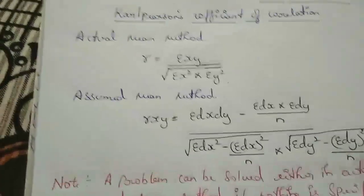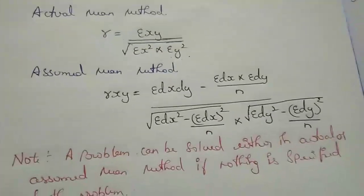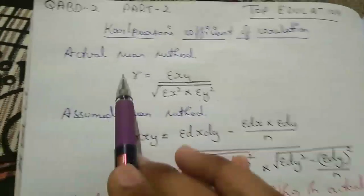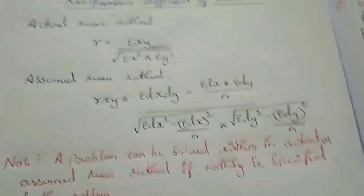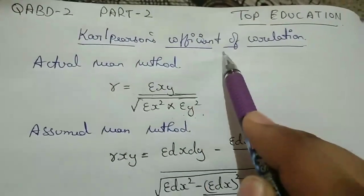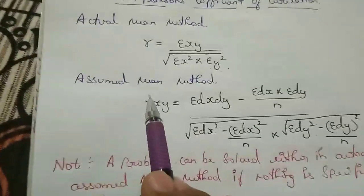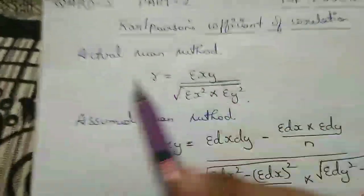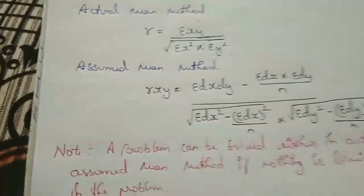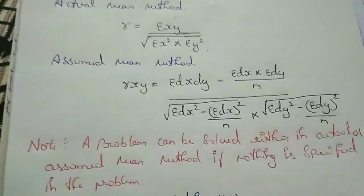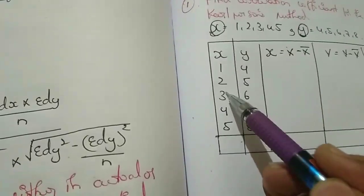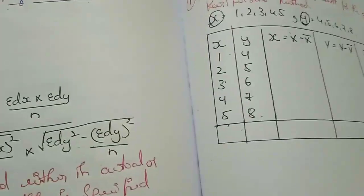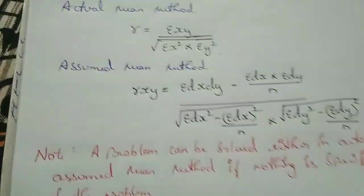As you may have done in second semester of Bcom or BBA, you have done the mean method. Here there is a little difference because it is Carl Pearson's coefficient of correlation. The actual mean method and the assumed mean method differ slightly — in the assumed mean method you assume a value like the middle number, first number, or last number. Here also you will take an assumed mean method, and the formula is: